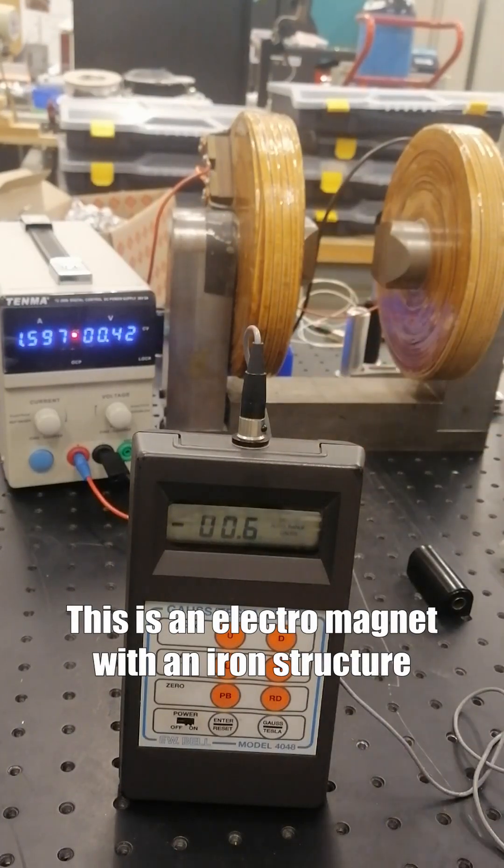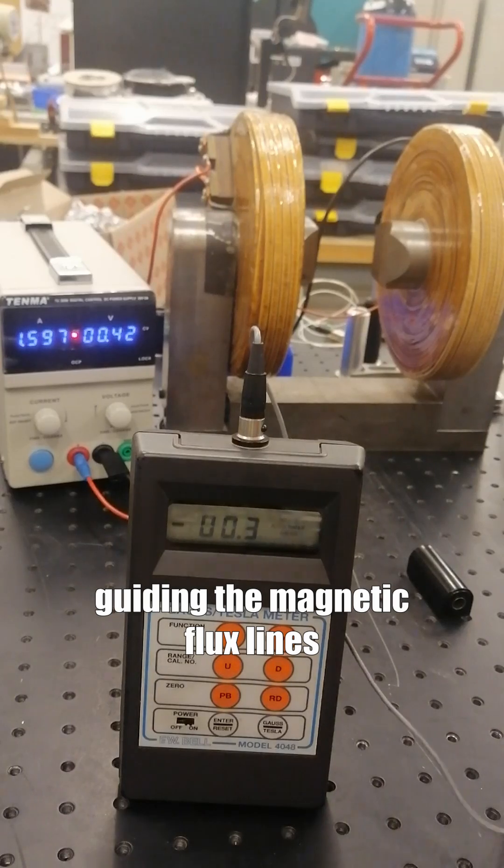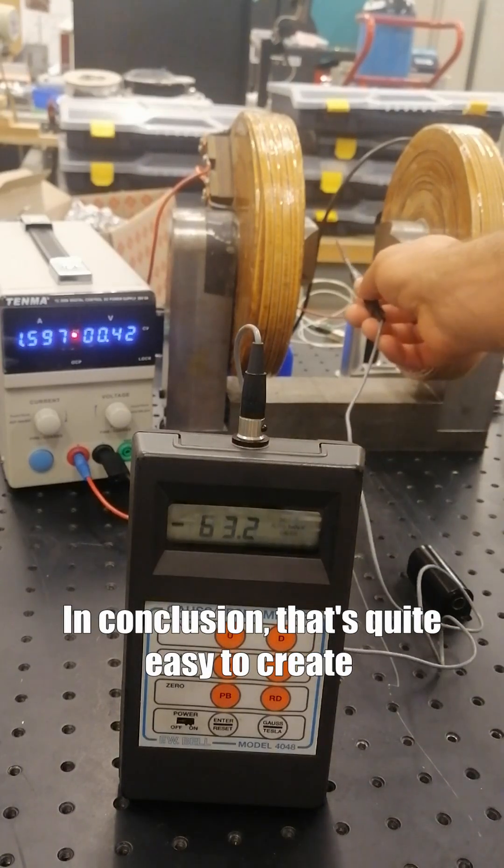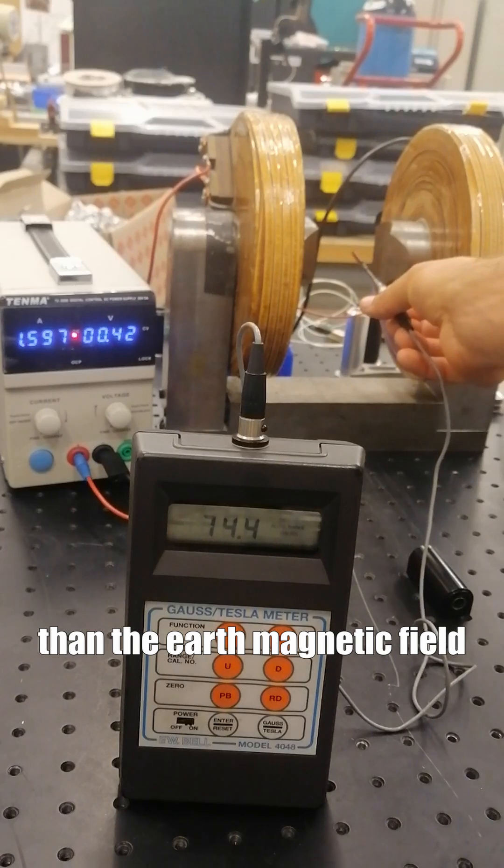This is an electromagnet with an iron structure, with two coils helping to guide the magnetic flux lines. In conclusion, it's quite easy to create a magnetic field that is stronger than the Earth's magnetic field.